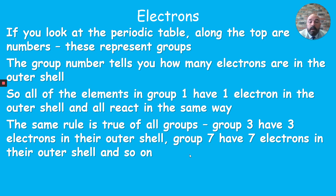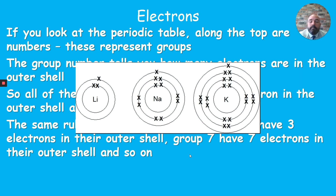The exception is group zero — it doesn't mean zero electrons in the outer shell. It means the shell is full and can fit zero more electrons. Looking at examples: lithium has atomic number 3, giving configuration 2, 1. Sodium has atomic number 11, giving 2, 8, 1. Potassium has atomic number 19, giving 2, 8, 8, 1 — two in the first shell, eight in the second, eight in the third, and one in the fourth.